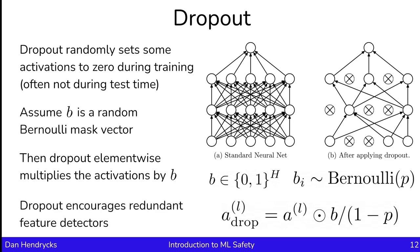Dropout encourages redundant feature detectors. So if one of the activations is masked, another neuron needs to pick up the slack and learn the function that the other neuron was learning. Consequently, if one of the neurons fail during test time, we can rely on another neuron to have detected that feature. This encourages redundancy and can help improve representations. It can also limit the extent to which neurons learn finicky or fragile features, since without Bernoulli noise injection they could end up learning fairly complicated functions. Since a neuron's interconnections during training keep changing, the neuron is forced to learn simpler, more compatible, and less idiosyncratic features.